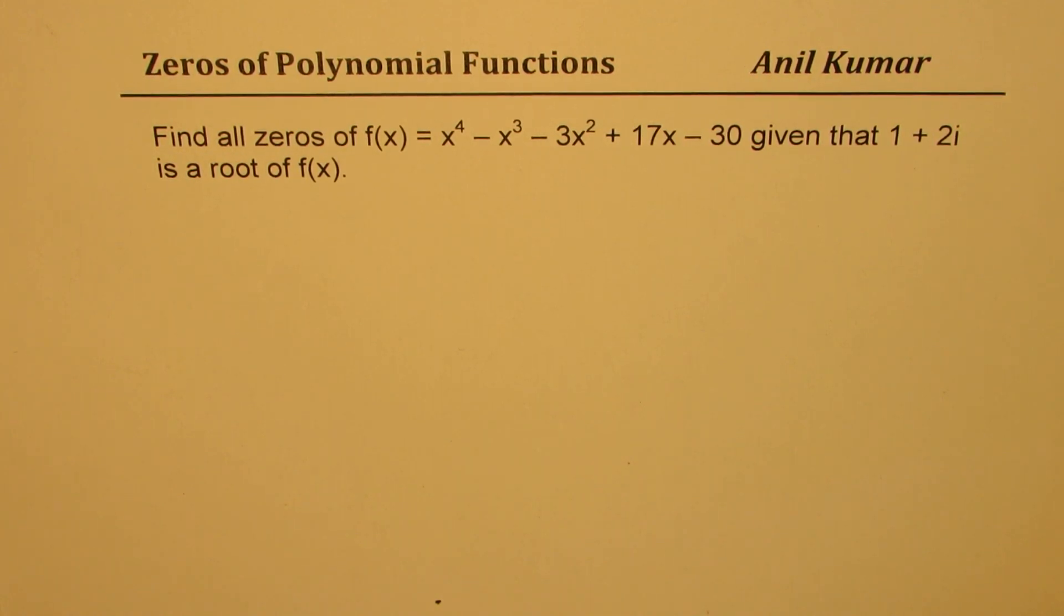The example here is: find all zeros of f(x) = x^4 - x^3 - 3x^2 + 17x - 30, given that 1 + 2i is a root of f(x). You can always pause the video, answer the question, and then look into my suggestions.